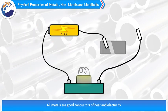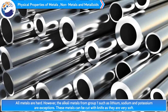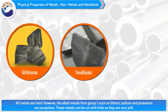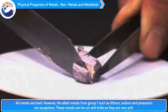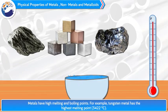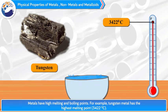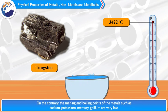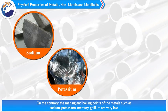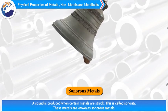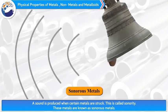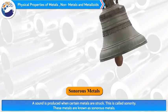4. All metals are good conductors of heat and electricity. 5. All metals are hard. However, the alkali metals from group 1 such as lithium, sodium and potassium are exceptions — these metals can be cut with a knife as they are very soft. 6. Metals have high melting and boiling points. For example, tungsten metal has the highest melting point at 3,422 degrees Celsius. On the contrary, the melting and boiling points of sodium, potassium, mercury, and gallium are very low. 7. A sound is produced when certain metals are struck — this is called sonority. These metals are known as sonorous metals.